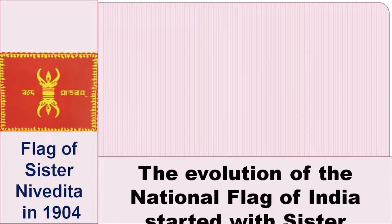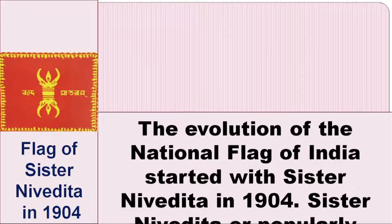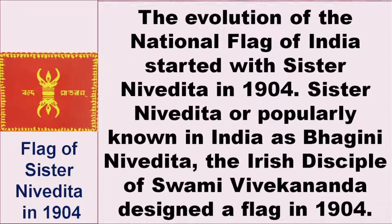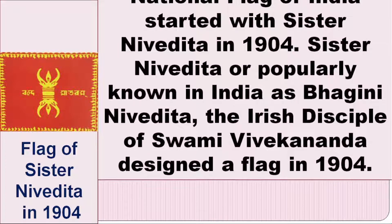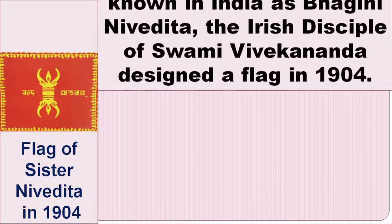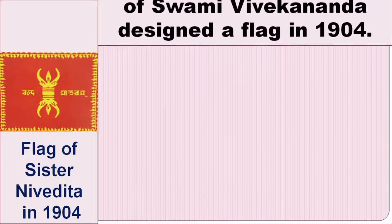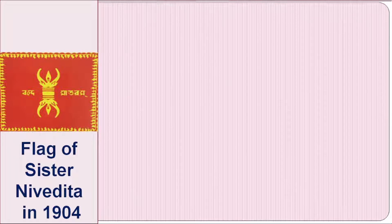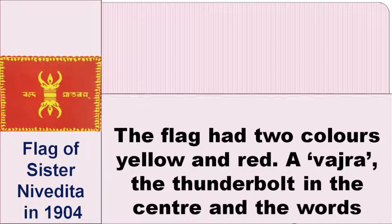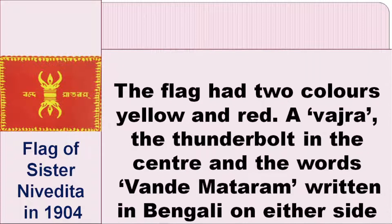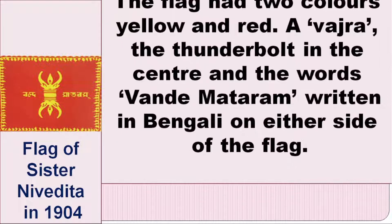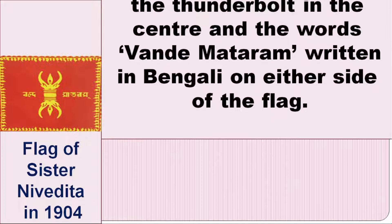The evolution of the national flag of India started with Sista Nivedita in 1904. Sista Nivedita, popularly known in India as Bhagini Nivedita, the Irish disciple of Swami Vivekananda, designed a flag in 1904. The flag had two colors, yellow and red, a Bajra (the thunderbolt) in the center, and the words Bandi Mahatram written in Bengali on either side of the flag.